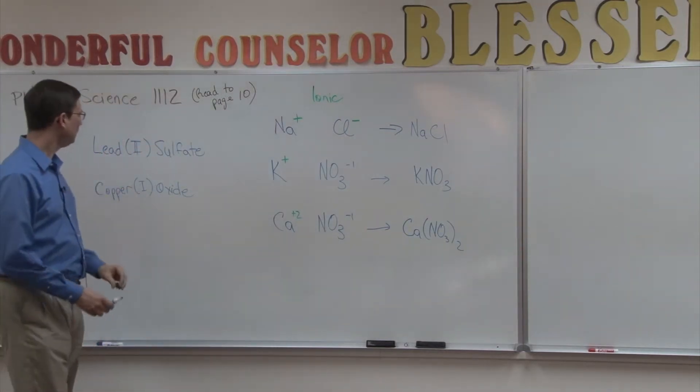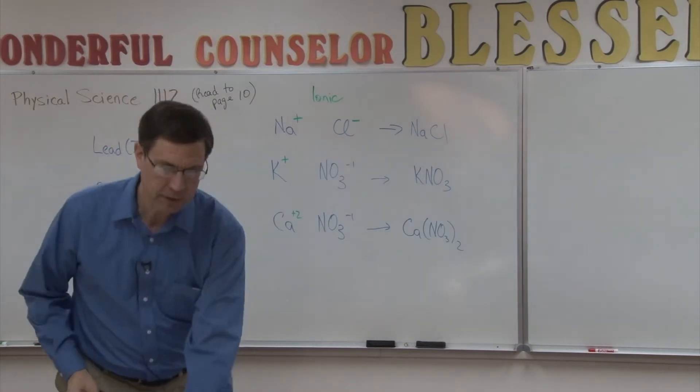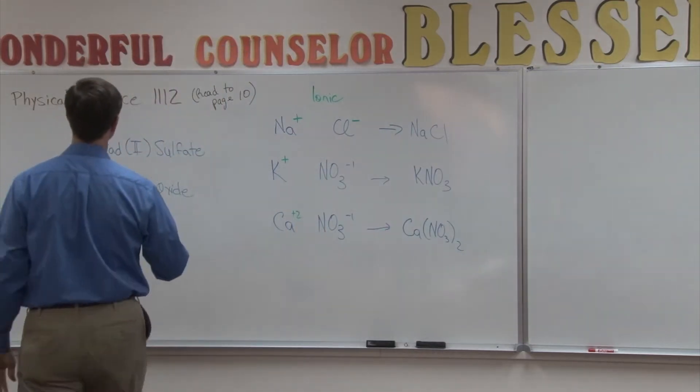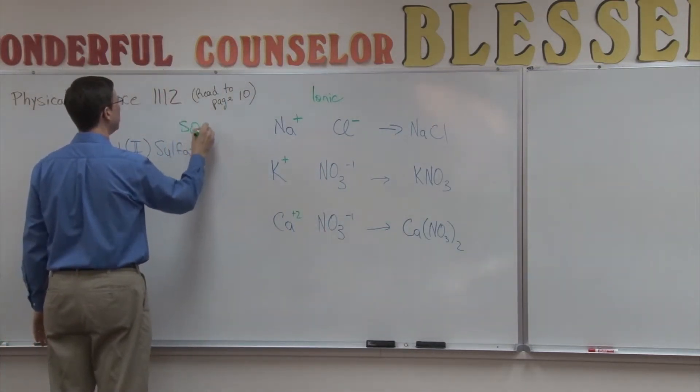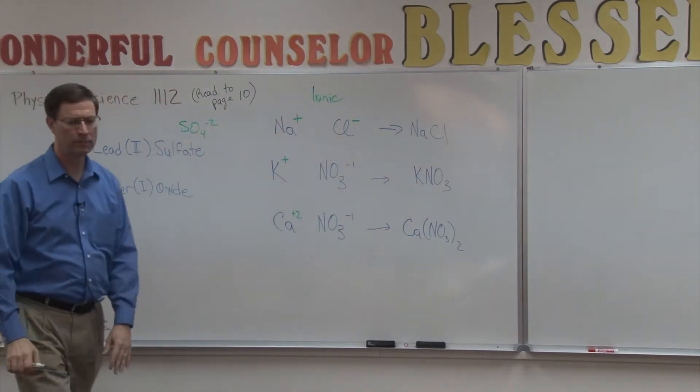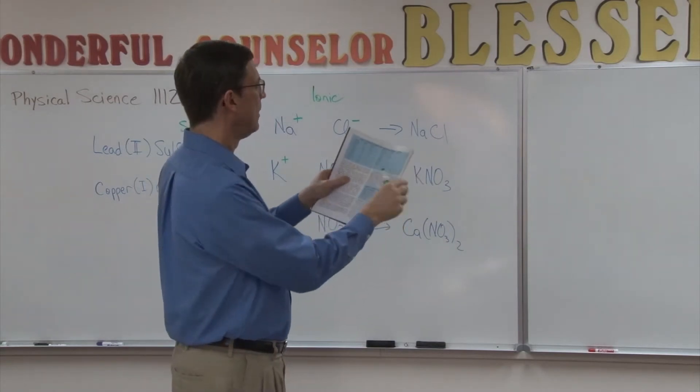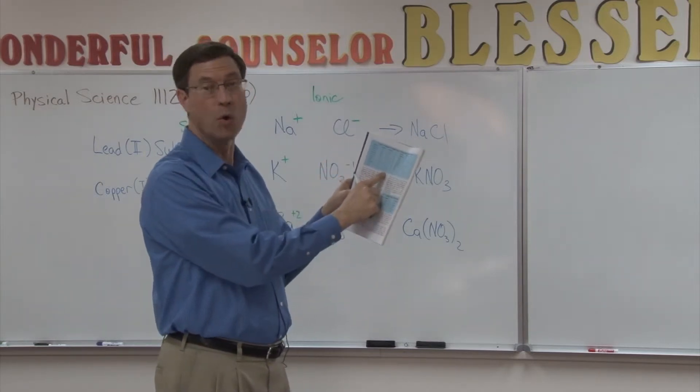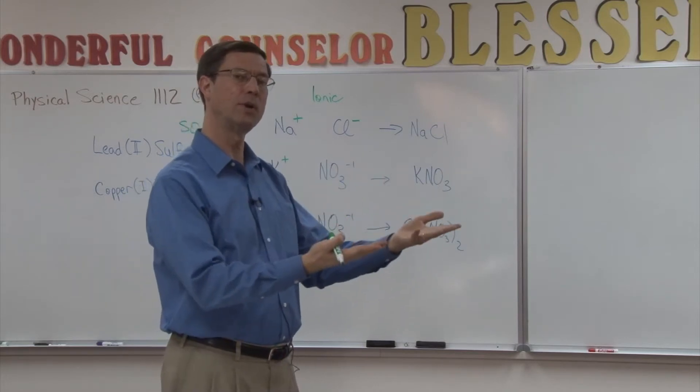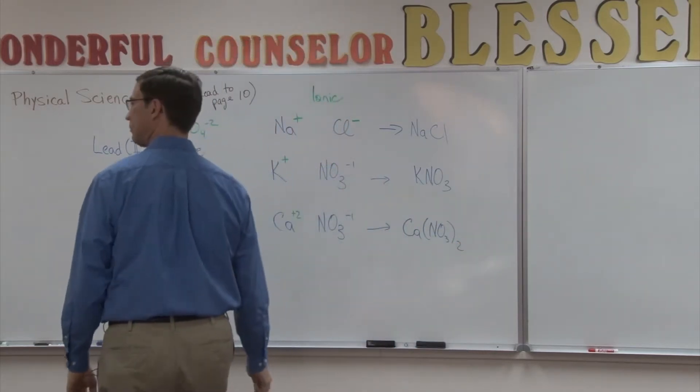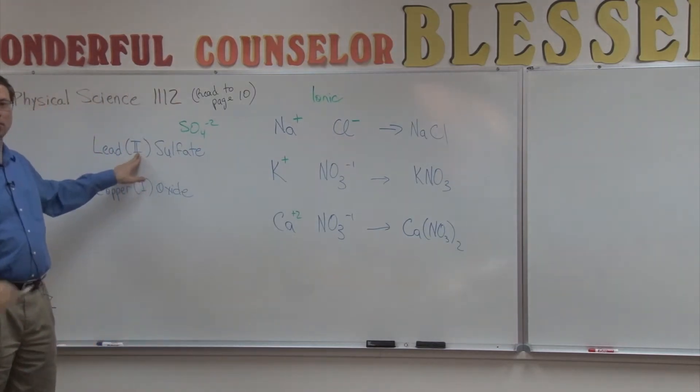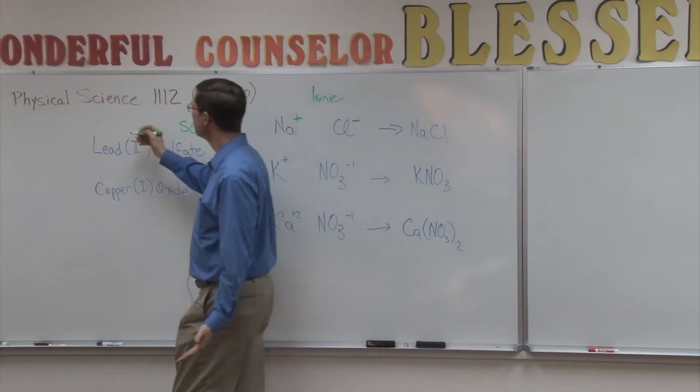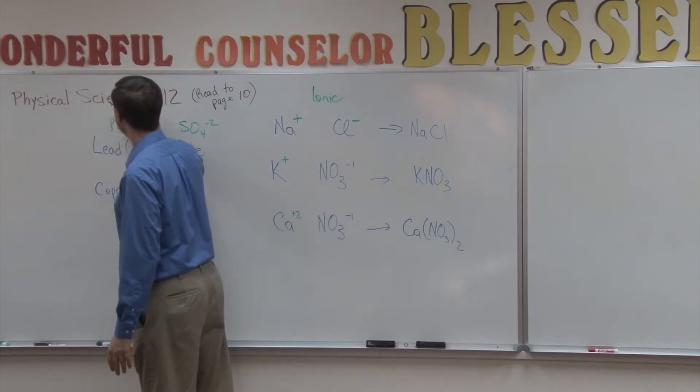Now let's do something a little different here. Lead sulfate. So I'm going to take the chart here. We're going to look up sulfate. It's SO4, and it has a charge of negative two. And then I have lead. Now lead, if you look at the chart on the top of page eight, lead can have a charge of positive four or positive two. So how do we know which one? Is it giving up four electrons or is it giving up two electrons? This is where the Roman numeral comes in. Really easy. The Roman numeral tells you what the positive charge is.